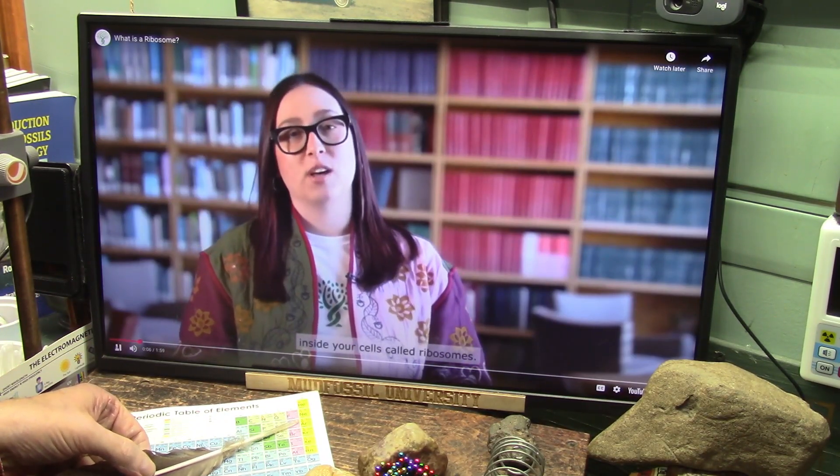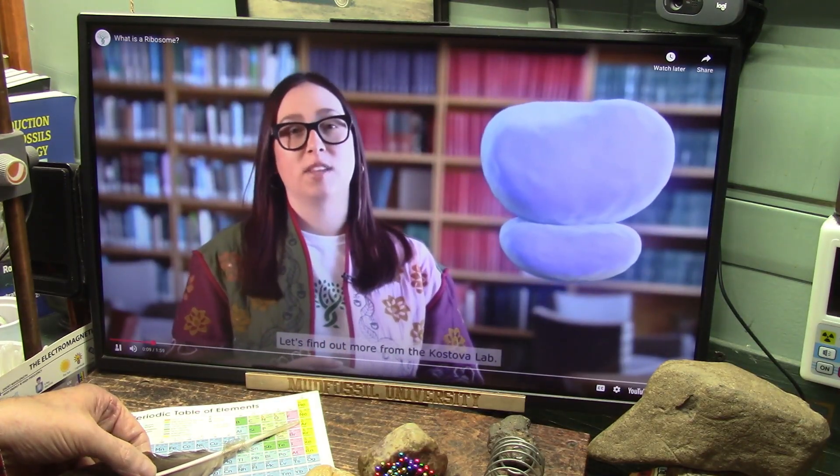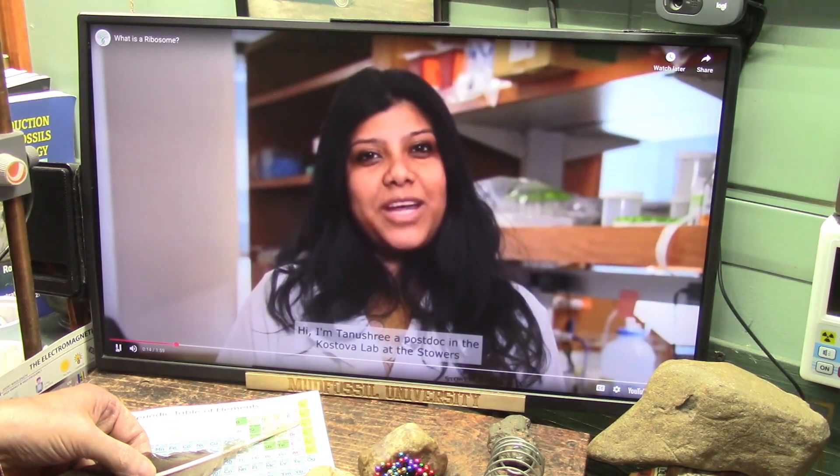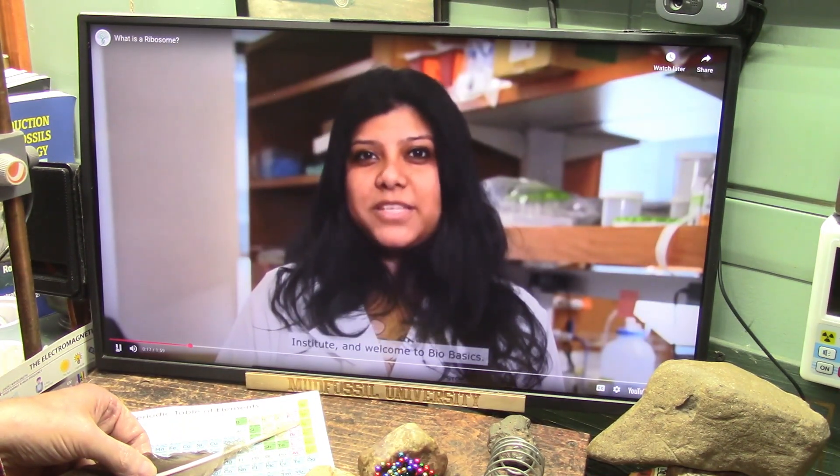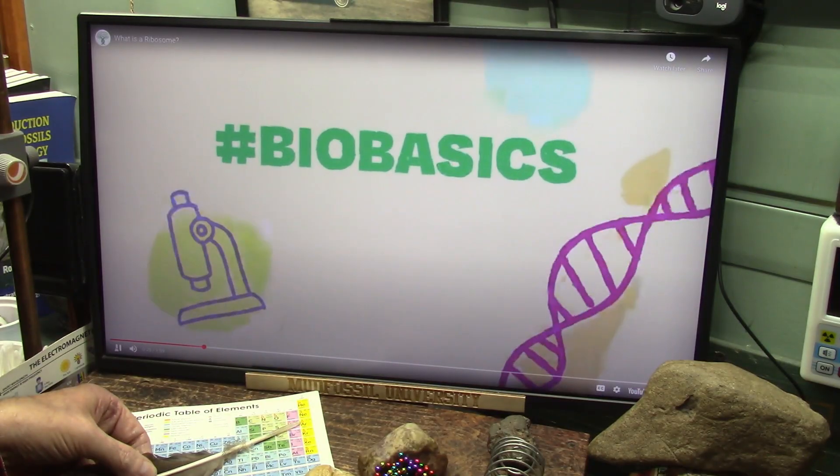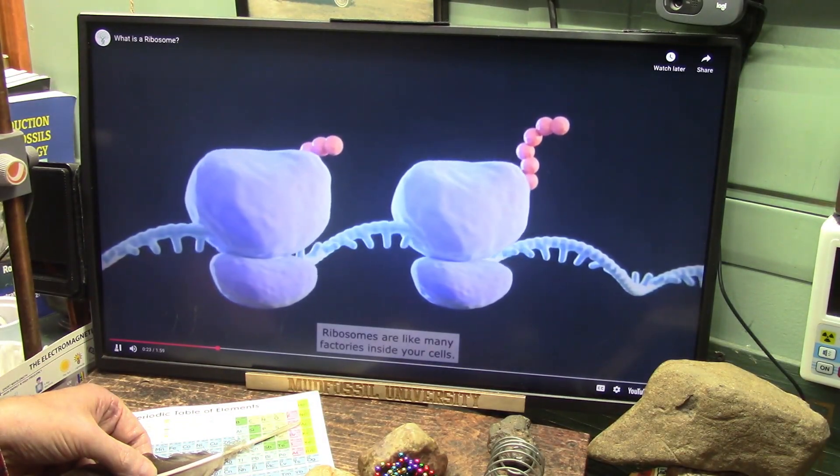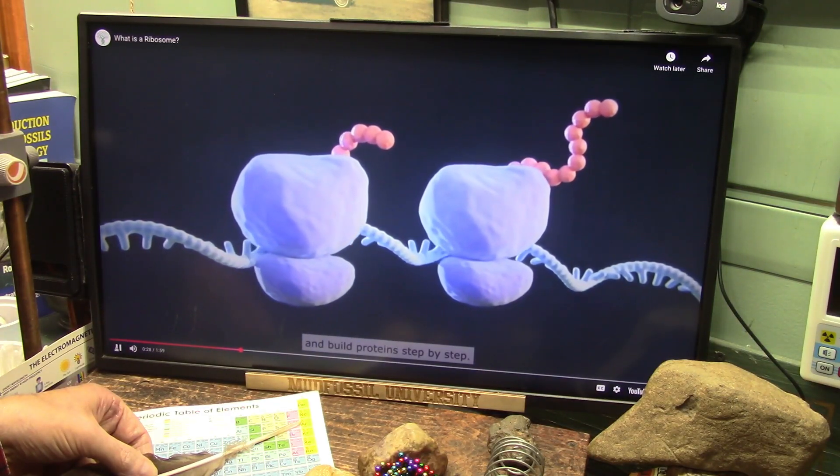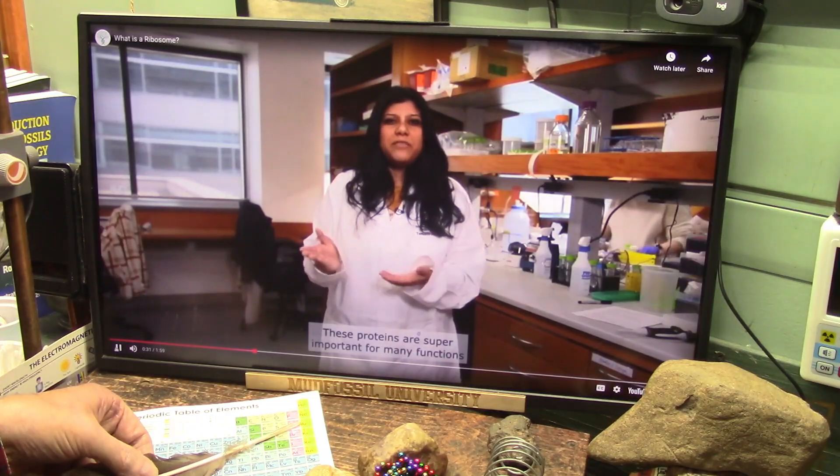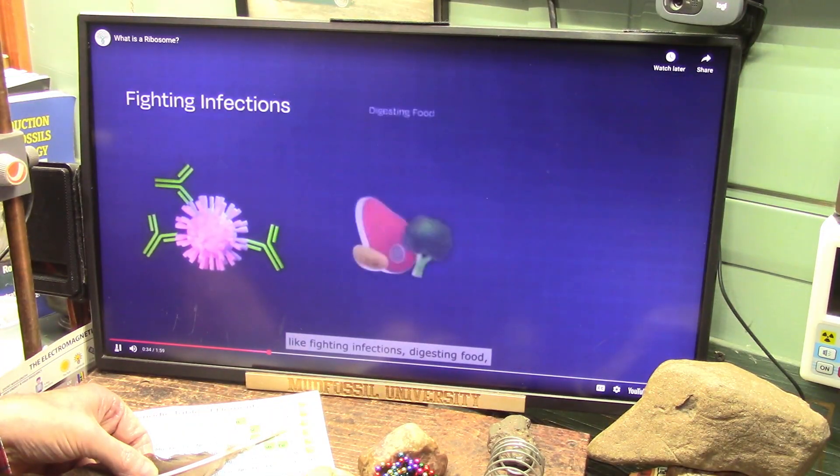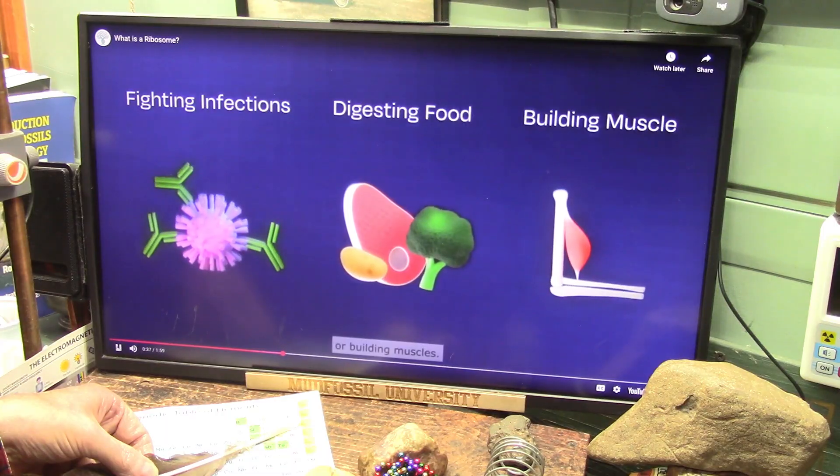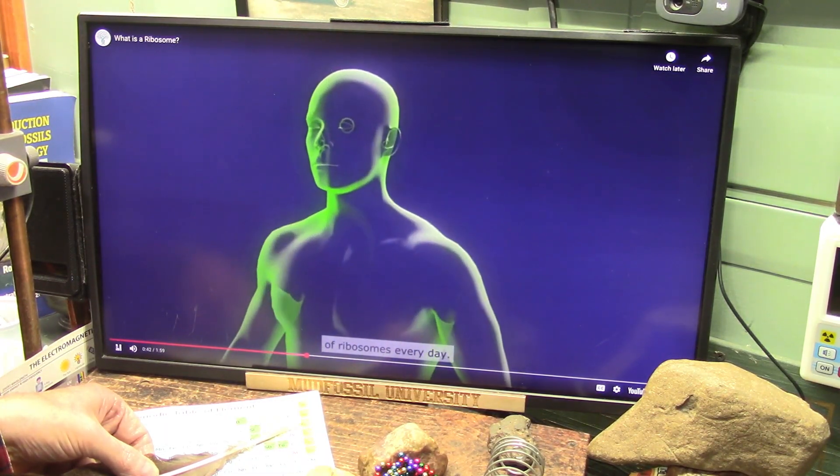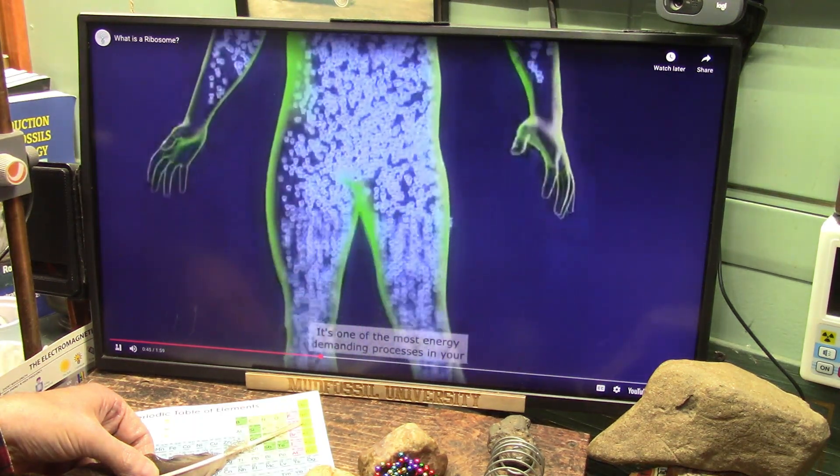Have you ever wondered how your body builds proteins, essential molecules that keep you alive? Proteins are the essential molecules to keep you alive. Ribosomes are required to create the proteins. Well that's thanks to tiny machines inside your cells called ribosomes. 'Hi I'm Tanushree, a postdoc in the Kostova lab at the Stowers Institute, and welcome to BioBasics.'